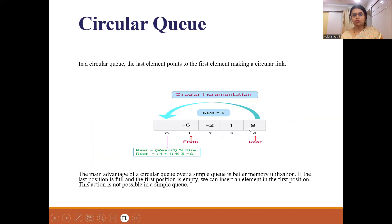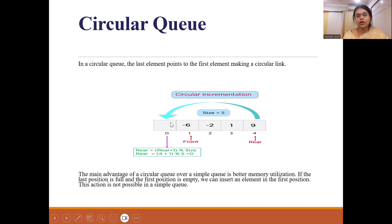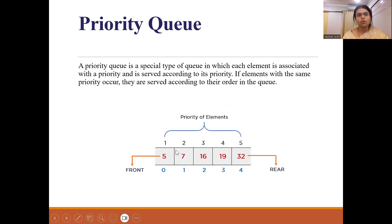In the circular queue, the last element points to the first element making a circular link. A small modification is made: instead of checking rear equals maximum minus one, we use rear = (rear + 1) mod size. For example, with size 5, (4 + 1) mod 5 equals 0, so the next position wraps around to 0. This is the main advantage of the circular queue — the programming is similar to a simple queue with just this small change.